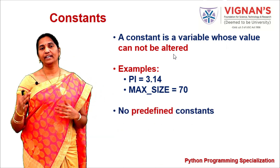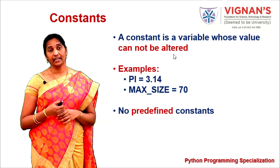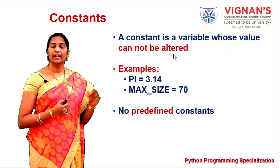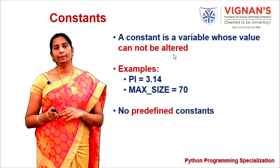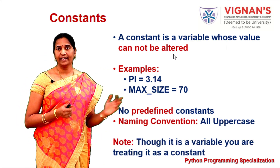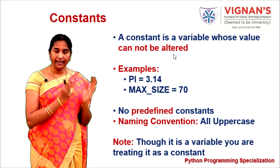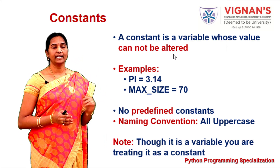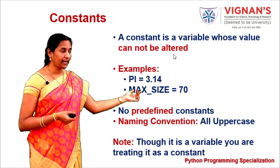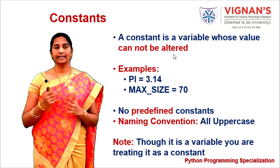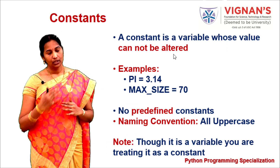In Python there are no predefined constants like in other programming languages. C and C++ offer predefined constants like pi and e, but in Python there are no predefined constants. Though they are available as variables and can be varied, you should ensure your code will not change the values assigned to constants. To recognize variables as constants, the naming convention is to use all uppercase letters.